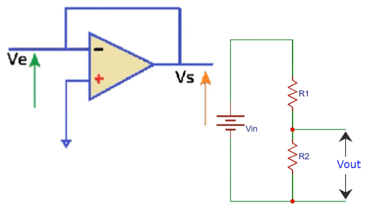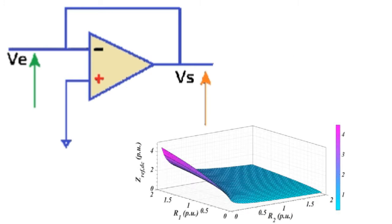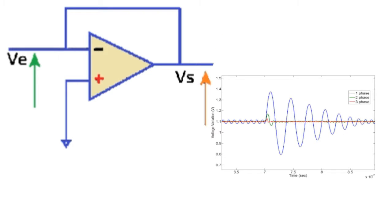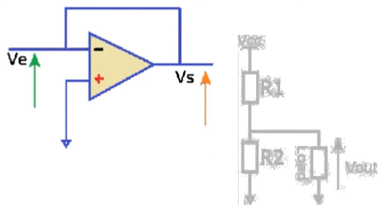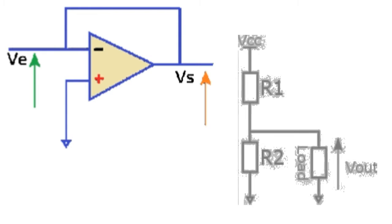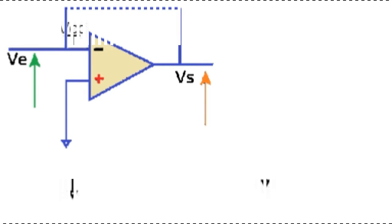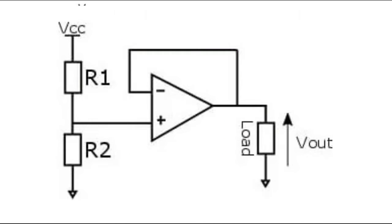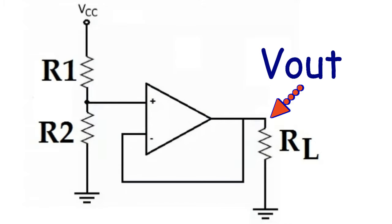This circuit is based on a voltage divider and the circuit cannot work. In fact, the load impedance can have variations, so the voltage V out can change dramatically, especially if the load impedance has a value equal to R2. To solve this problem, an amplifier is placed between the load and the voltage divider as shown in the figure. Therefore, V out depends on R1 and R2 and not on the load value.